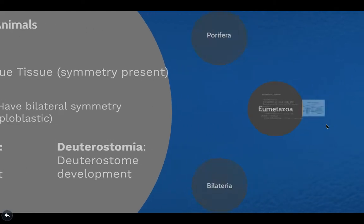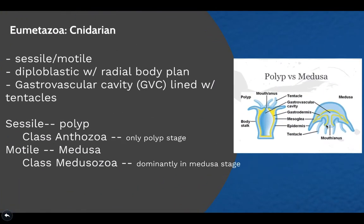The next clade is the eumetazoan clade — specifically the cnidarians. Cnidarians can be either sessile or motile, but in both forms they are diploblastic with a radial body plan and they have a gastrovascular cavity lined with tentacles. The polyp form, shown on the left of the figure, is the sessile or stationary form. The medusa form, on the right, is the mobile form — these organisms move around and search for food.